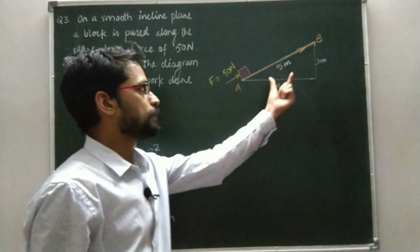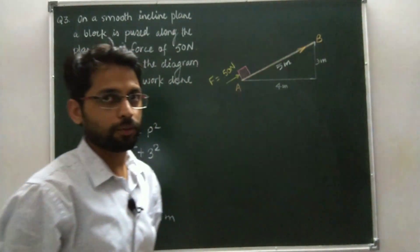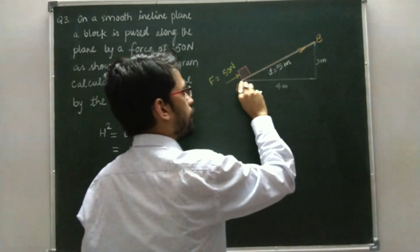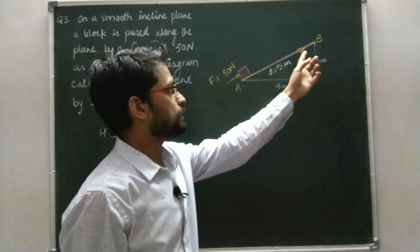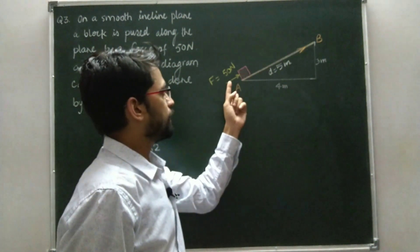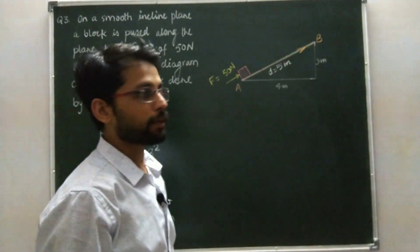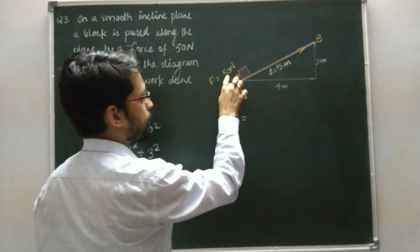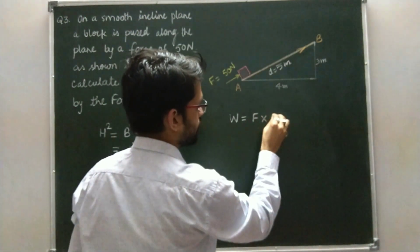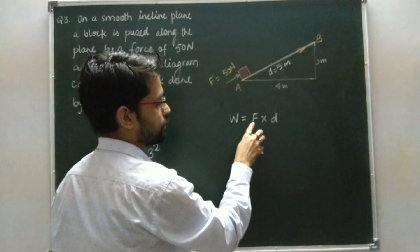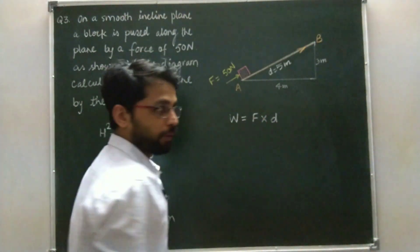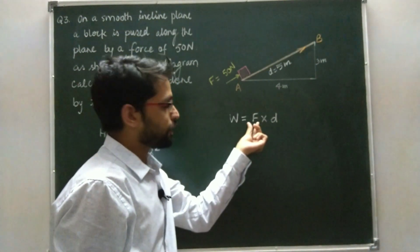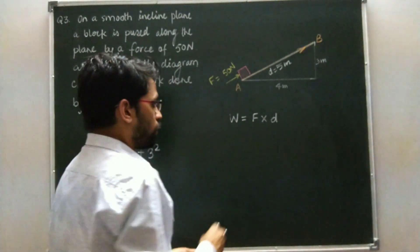The hypotenuse of 5 meters equals the displacement of the body. So the displacement is 5 meters along A to B, and the direction of displacement is in the direction of the force. Work done equals force multiplied by displacement in the direction of force — it is very important that the displacement must be in the direction of force.